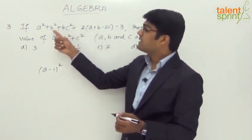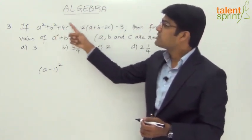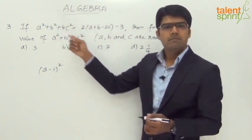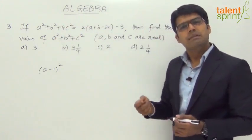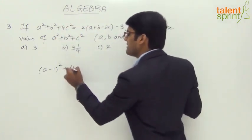Now look at the second term here: b² - 2b + 1. b² - 2b + 1 is (b - 1)², so plus (b - 1)².